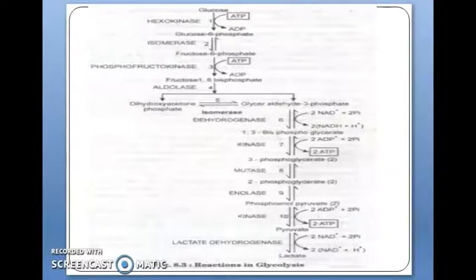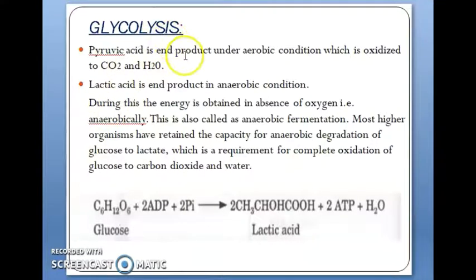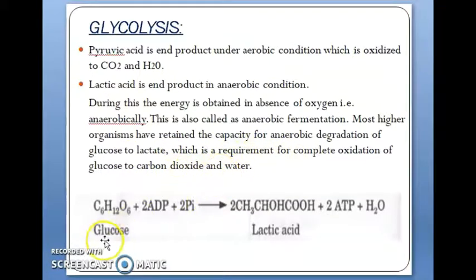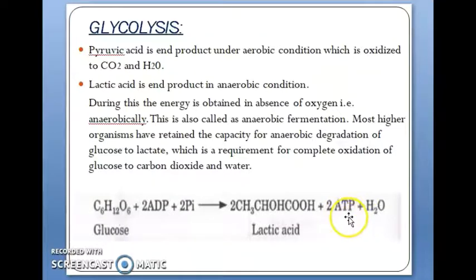This completes the reactions involved in the glycolysis cycle. Pyruvic acid is the end product under aerobic conditions, where it is further oxidized to carbon dioxide and water. Lactic acid is the end product under anaerobic conditions, where energy is obtained in the absence of oxygen — this is also called anaerobic fermentation. Most higher organisms have retained the capacity for anaerobic degradation of glucose to lactate. The overall reaction is: glucose plus two molecules of ADP and phosphate yields lactic acid plus two molecules of ATP and water.